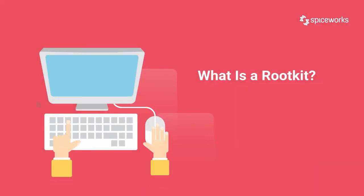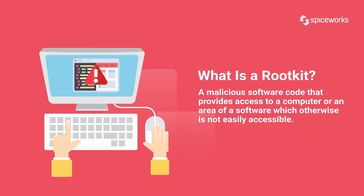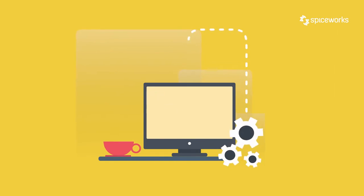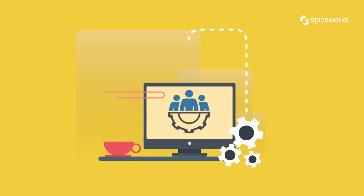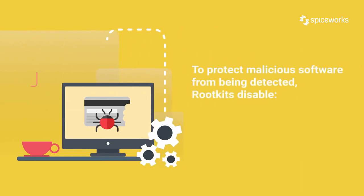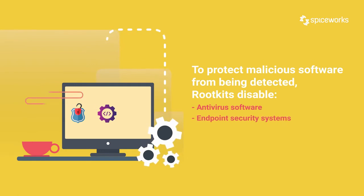What is a rootkit? A rootkit is defined as a malicious computer program that allows bad actors to get privileged access, also called root access, to an endpoint device. By breaching the application, bad actors can reach the kernel or core of a computer's operating system while using malicious code in disguise to avoid detection. Although some rootkits have legitimate uses including offering additional end-user support, the majority unlock a backdoor on victims' systems and frequently disable antivirus software, endpoint security systems, and anti-malware to protect malicious software from being detected.